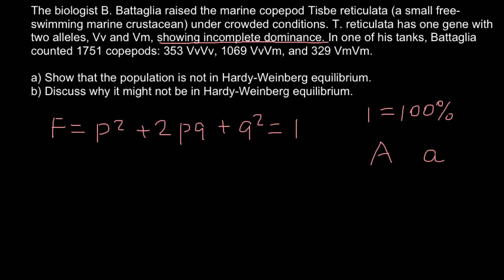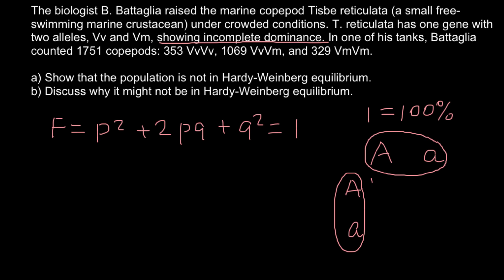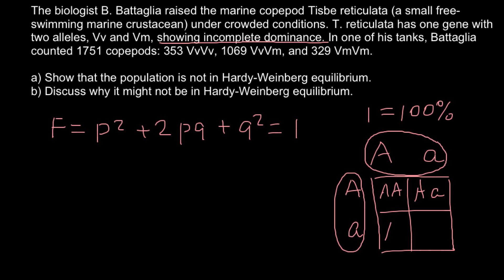Imagine that capital A stands for red color and small a stands for white color. When we have the heterozygous genotype, it wouldn't be red as in simple Mendelian genetics — for example, if it is the flower color of a plant, it's going to be intermediate, or pink. When we have two parents who are heterozygous — pink — and we cross them, we can get progeny genotypes: capital A capital A, capital A small a, capital A small a, and small a small a.